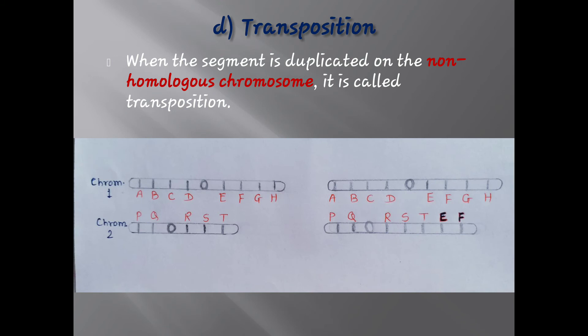In transposition, the segment is duplicated on a non-homologous chromosome. Unlike tandem, reverse tandem, or displaced tandem — where duplicated segments remain on the same chromosome — in transposition the duplicated segment is present on another non-homologous chromosome. Here, segment E, F of chromosome 1 is duplicated onto chromosome 2, which is called transposition.